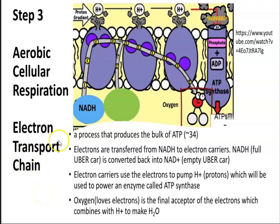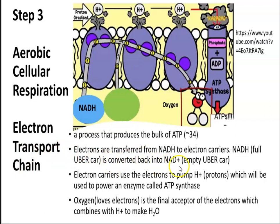The electron transport chain produces the bulk or majority of ATP. We know that the mitochondrion is the organelle within the cell that produces our ATP — about 34 molecules of ATP. Electrons are transferred from NADH to electron carriers within the electron transport chain. Think of NADH as that full Uber car, which once it goes through the electron transport chain is converted back into NAD+, that empty Uber car, because it has dumped its electrons.